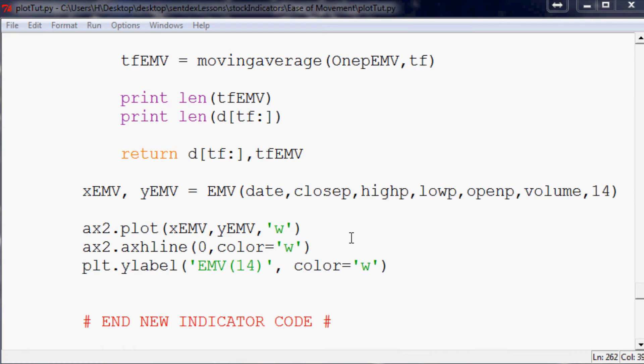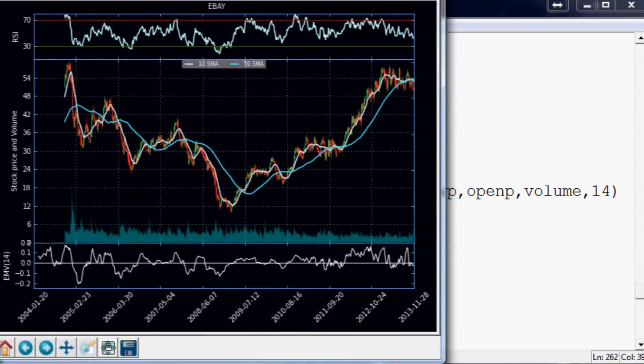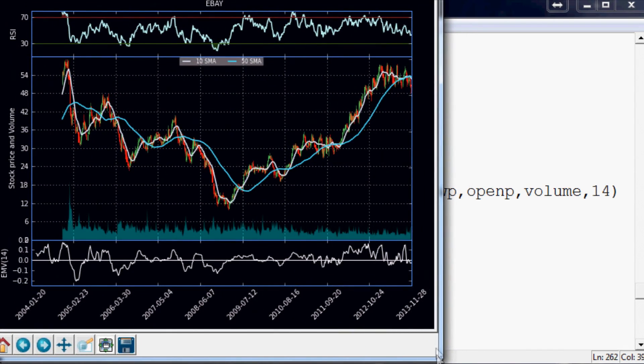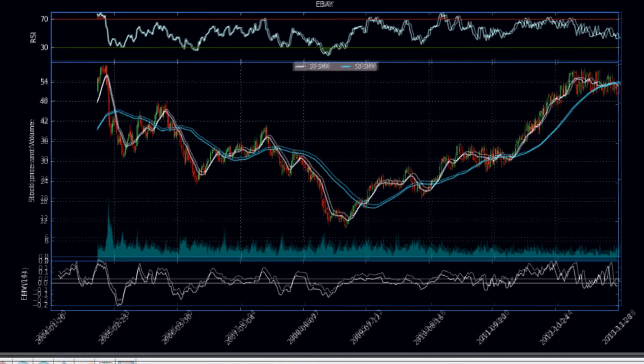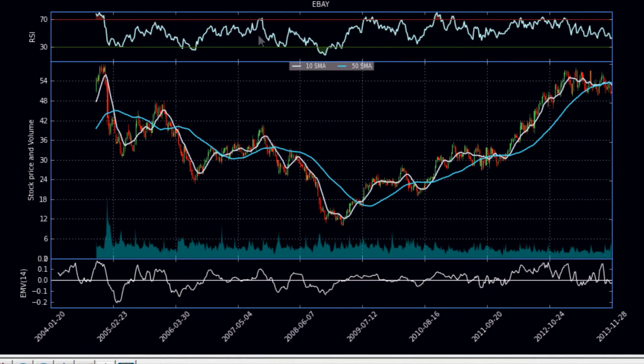So let's plot again. We'll plot eBay again. And here is eBay, and now we have that center line and a little label for it.